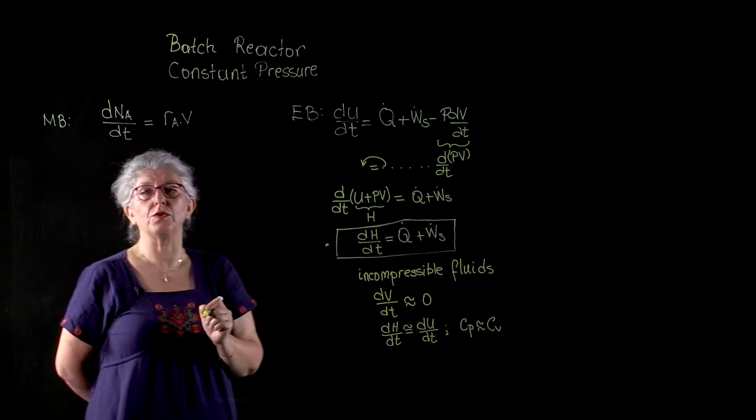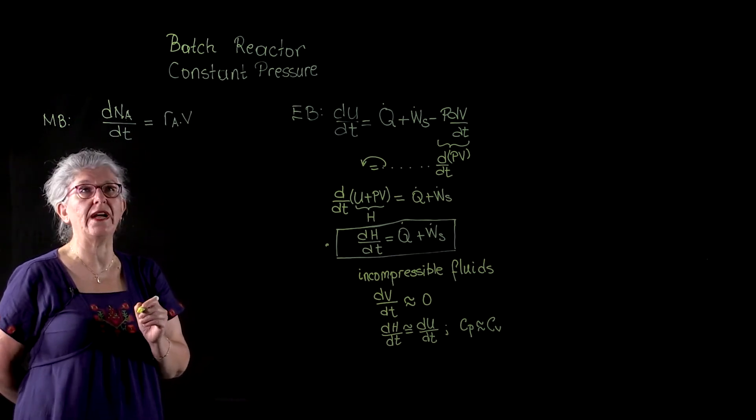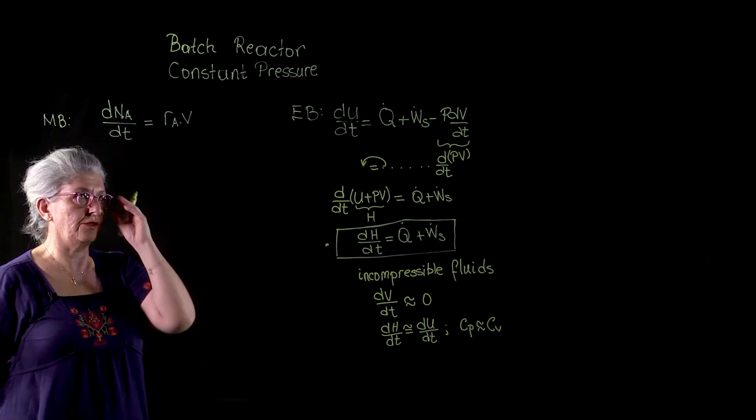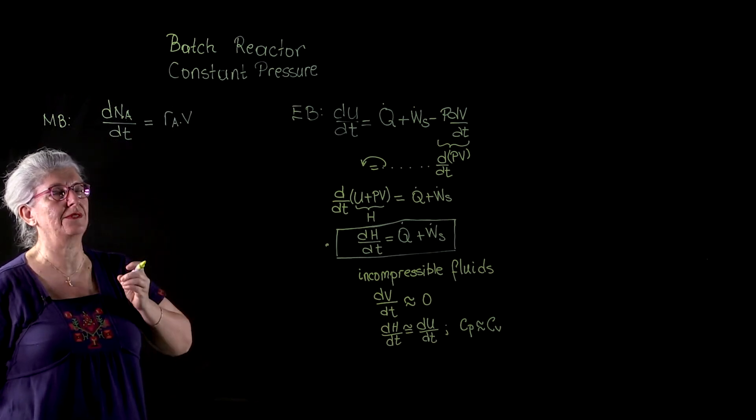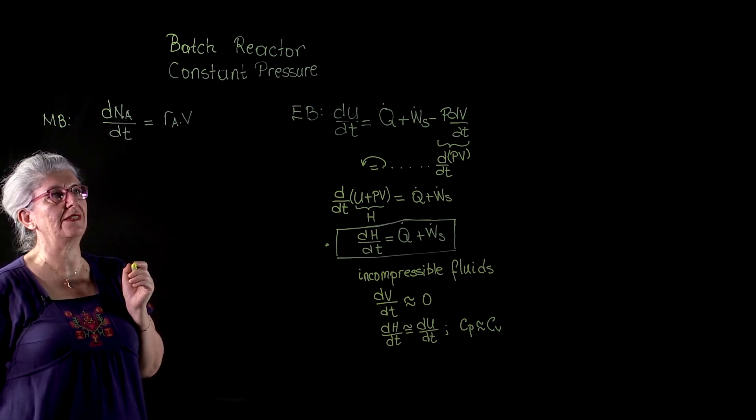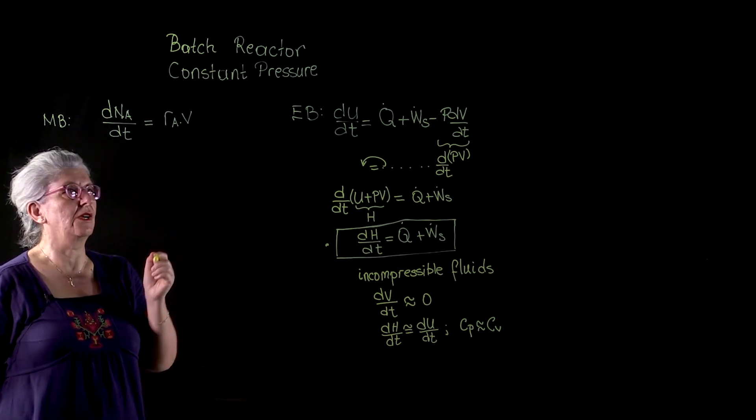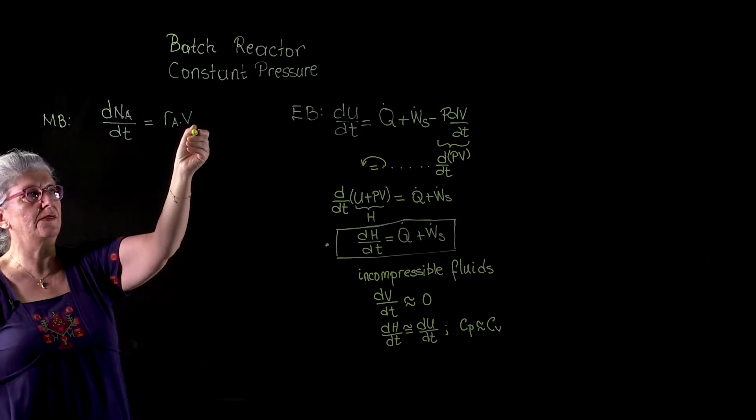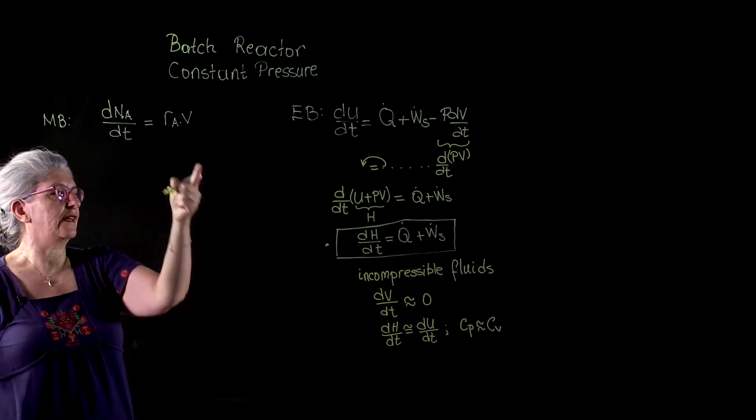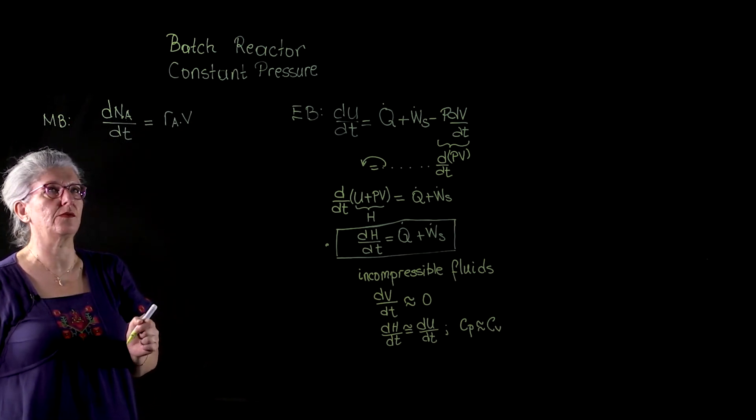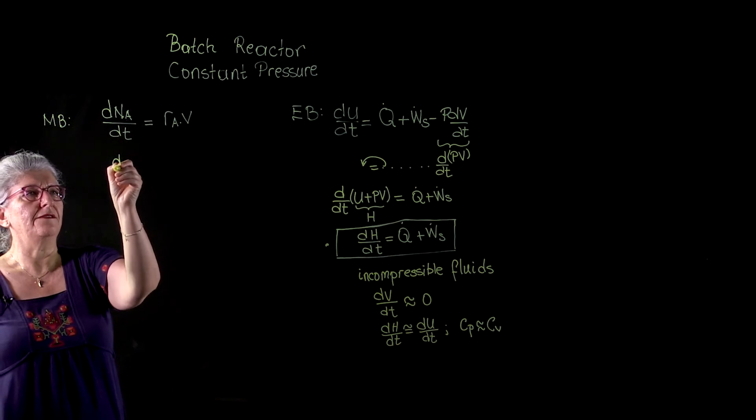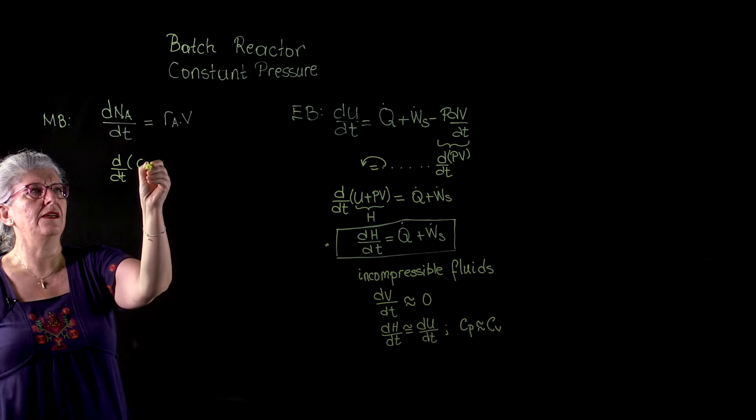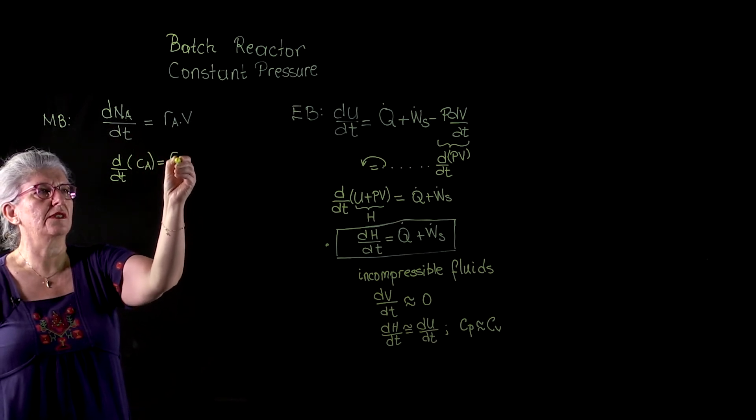So here I'm going to continue for the condition where we have an incompressible fluid. Because we have to develop descriptions, equations, rigorous equations to take the volume change into account. And I haven't done that yet. So we are going to proceed with an approximation that we are dealing with an incompressible fluid. As a result, we have d/dt CA to be equal to RA.